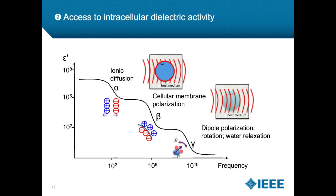Another key point: at microwave frequencies, waves can bypass the capacitive bilipidic membrane, giving access to the intracellular environment — which is not possible at lower frequencies. This is an important aspect enabling access to intracellular dielectric activity.